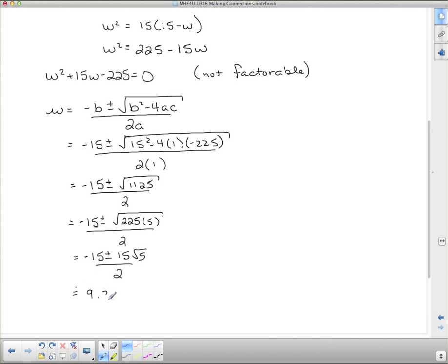Approximately 9.3 and approximately negative 24.3. Now negative 24.3, since we're talking about sides of a rectangle, this is inadmissible. Can't use it. Side of a rectangle cannot be negative. So we can say, therefore, the dimension should be length equal to 15 that we are given, and width equal to 9.3, to be a golden rectangle.